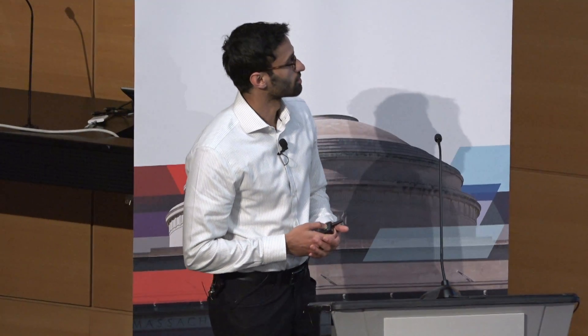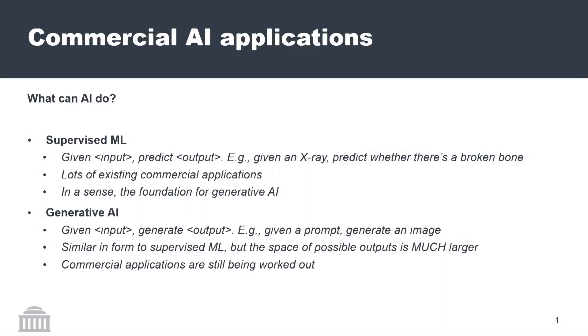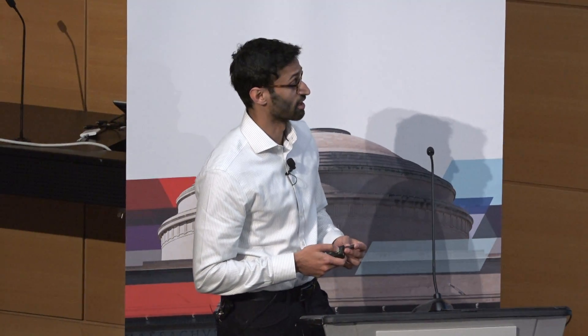I want to make a distinction — probably one that many of you have come across — between supervised machine learning, which is the more traditional approach to machine learning, where given an input you are attempting to predict an output. Canonical examples include: given an x-ray, can you tell me if there is a broken bone in it? Supervised machine learning has tons of existing commercial applications. Most of the AI that you come across on a daily basis is likely of this form — things like insurance risk pricing, a lot of the actual HR functions we see today, much of the data analytics that provide value to us today.